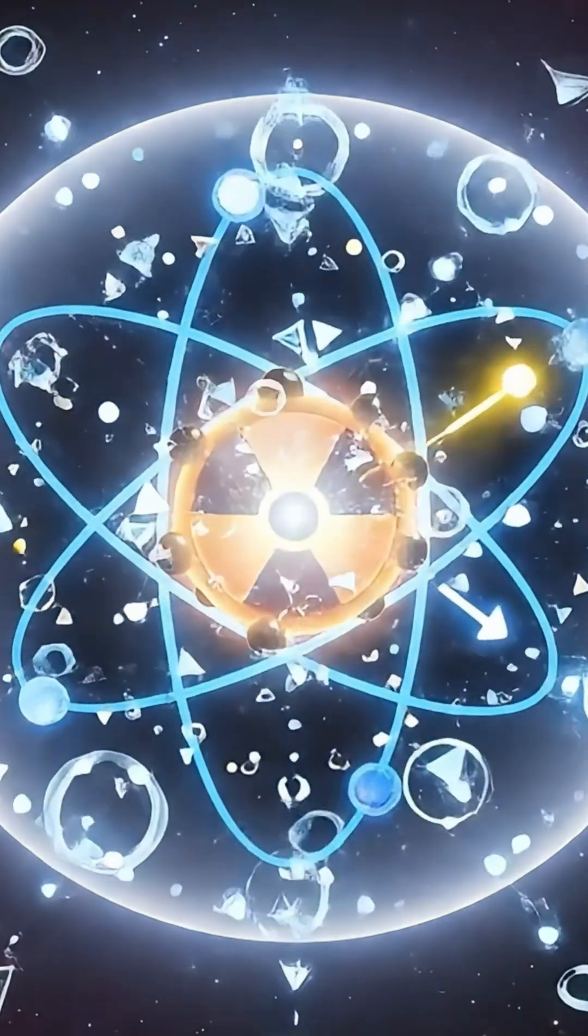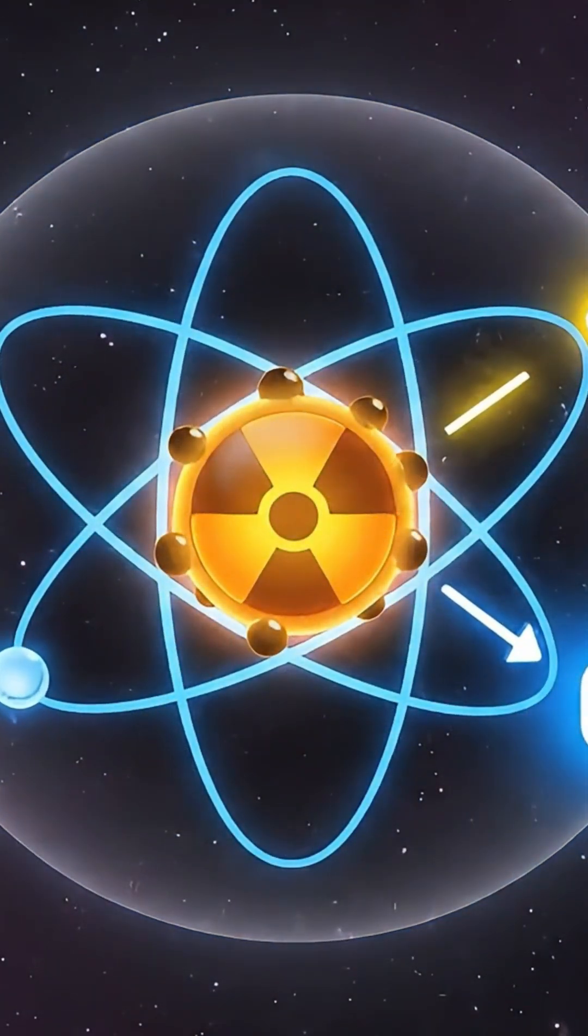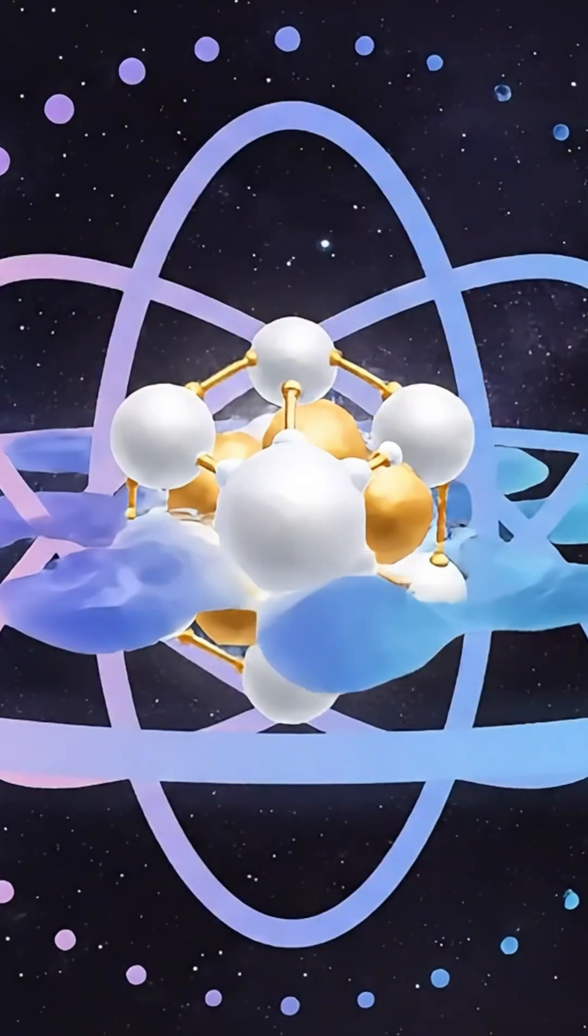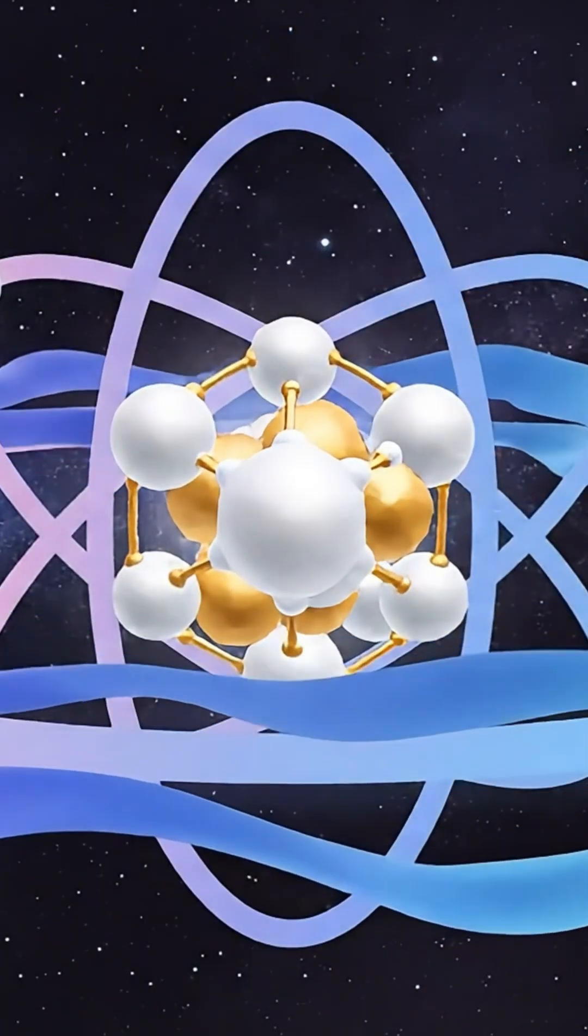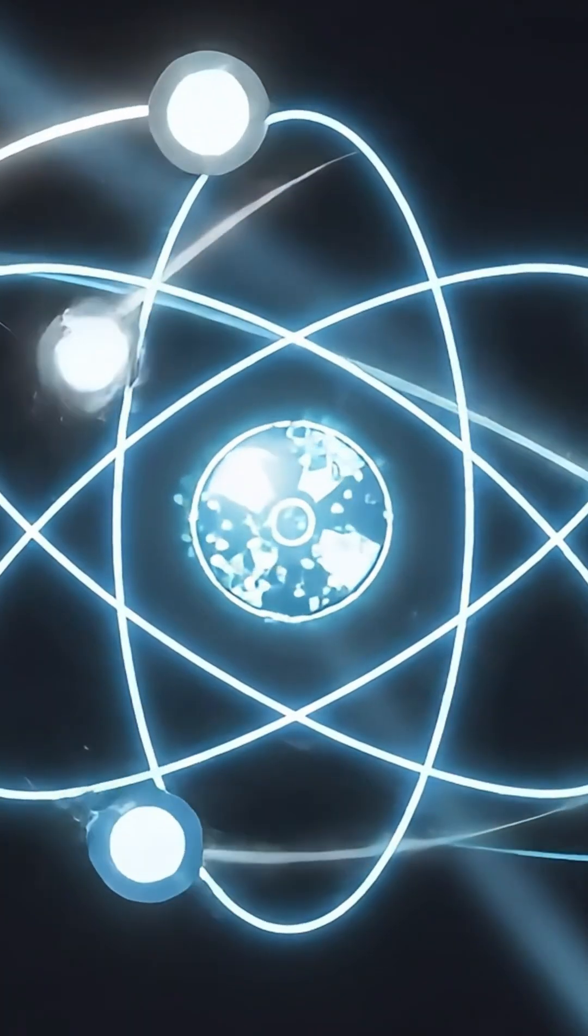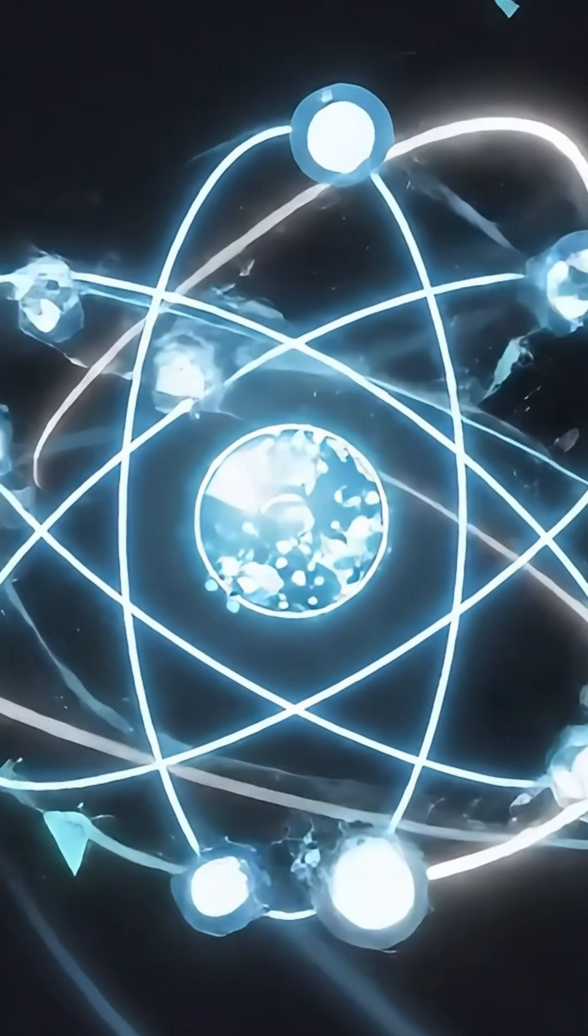Take a radioactive atom. Scientists can tell you the probability it will decay in the next hour. But no one can tell you exactly when. According to quantum mechanics, there's no information to find. The decay is truly, fundamentally random.